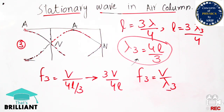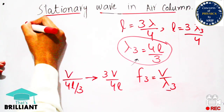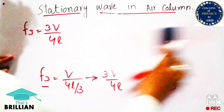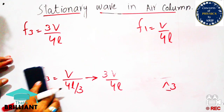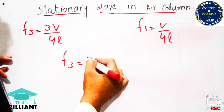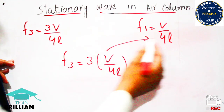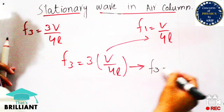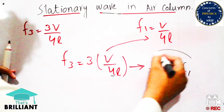Now we want to relate f₃ to the fundamental frequency f₁. We know f₁ = v / 4L and f₃ = 3v / 4L. The only difference between these two expressions is the factor of 3, so we can write f₃ = 3 × (v / 4L). Since v / 4L = f₁, we substitute and get f₃ = 3f₁.